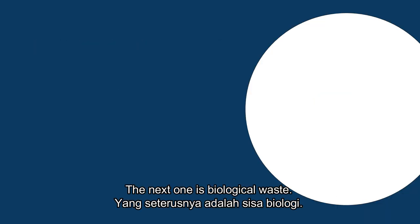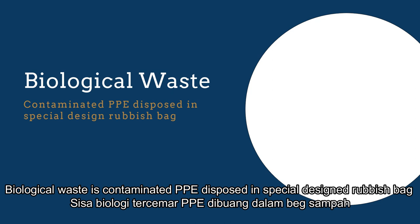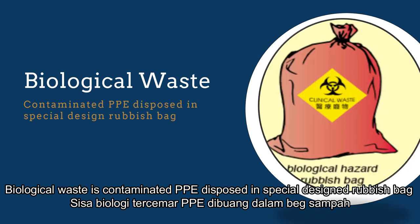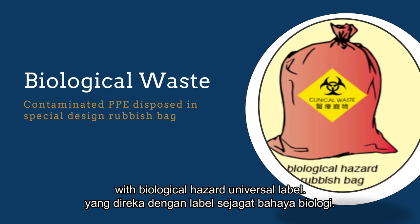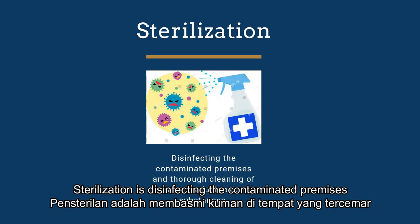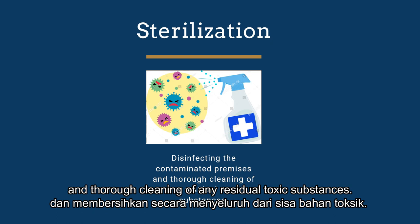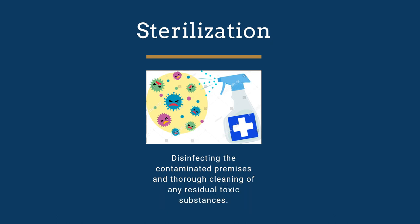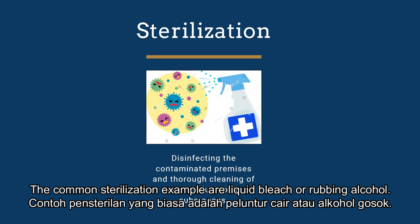The next countermeasure is biological waste management. Biological waste is contaminated PPE disposed of in specially designed rubbish packs with a biological hazard universal label. The last one is sterilization, which means disinfecting contaminated premises and thorough cleaning of any residual toxic substances. Common sterilization examples include liquid bleach or rubbing alcohol.